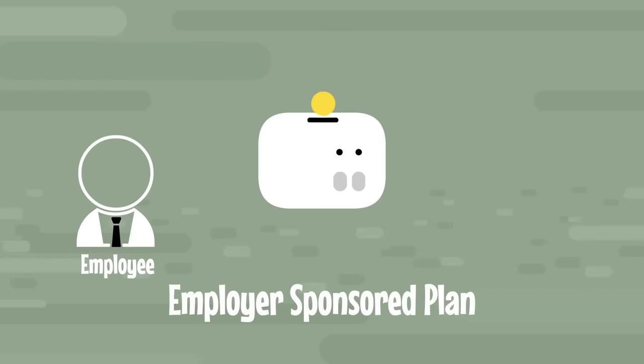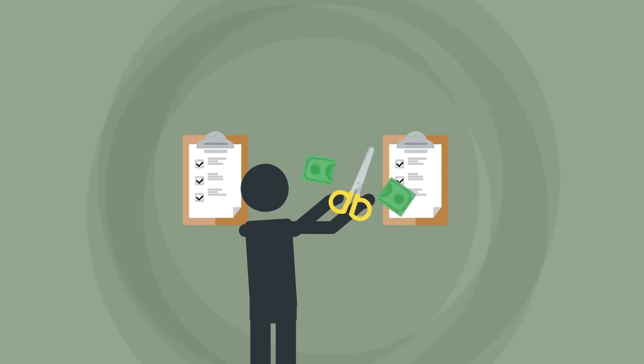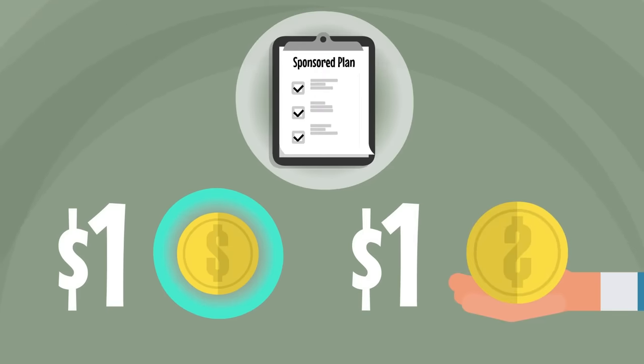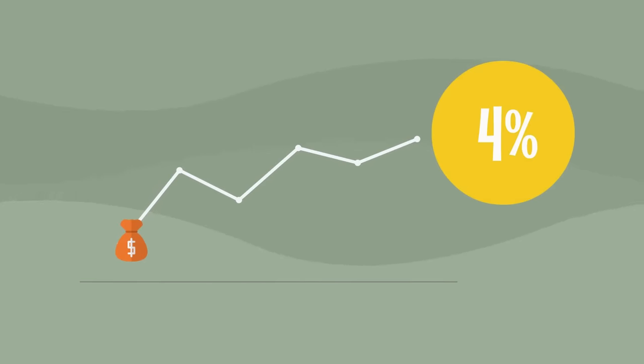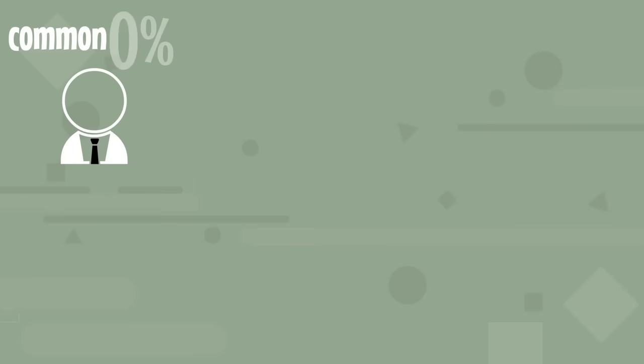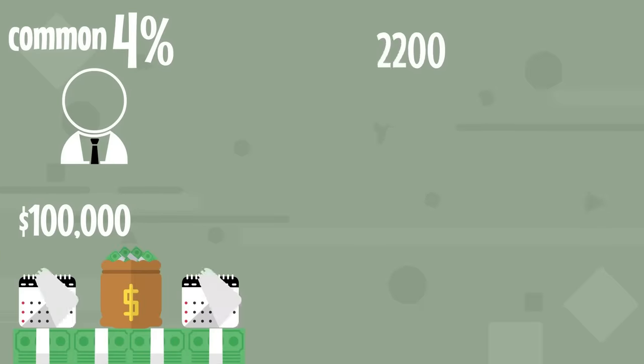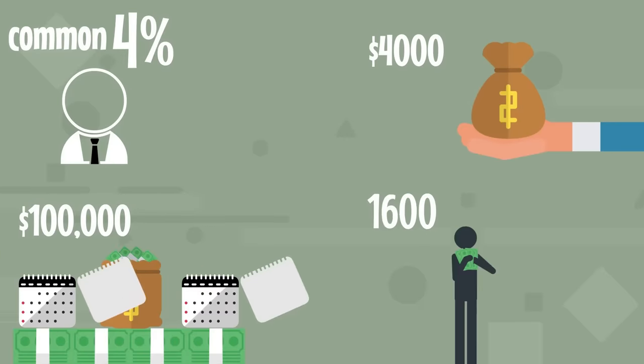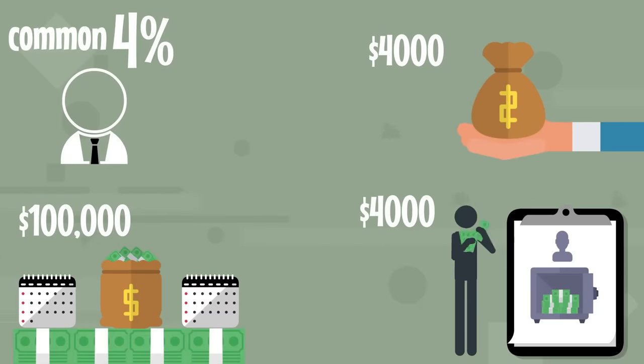The main benefit to choosing an employer-sponsored plan is that the employer matches. Oftentimes, because employers get a tax benefit, they'll often contribute one dollar for every one dollar you contribute to your sponsored plan, but only up to a certain percentage of your income. For example, a common employer match is 4%. That means if you make a hundred thousand dollars a year and you contribute four thousand dollars, that company will contribute four thousand dollars to your account as well.